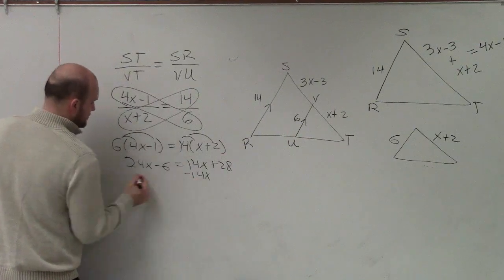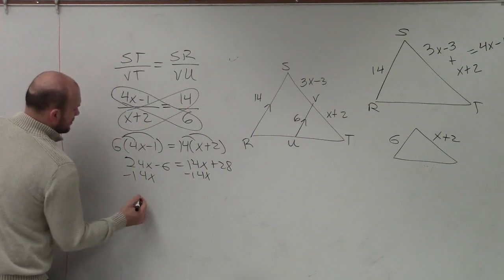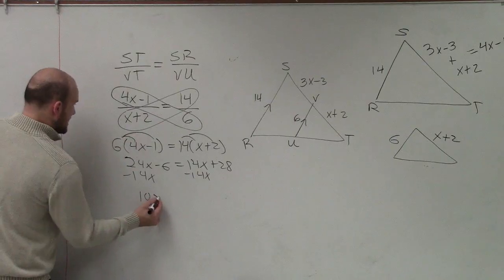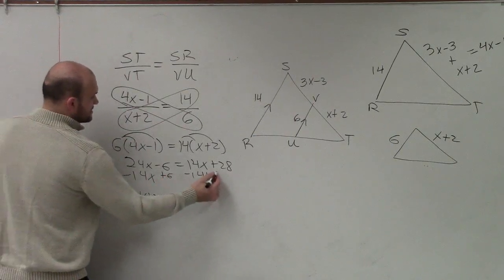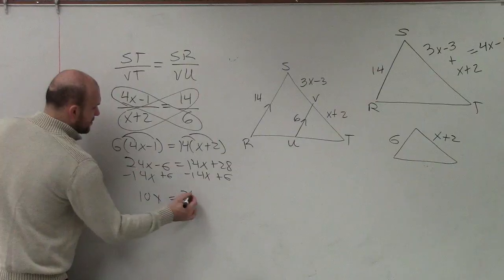What I'll do is I'll subtract 14x. So therefore, I have 10x, add 6. 10x equals 34.